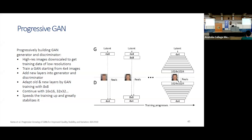One notable GAN example is the Progressive GAN (2018 paper). The key idea is to progressively grow both the generator and discriminator networks — starting from a 4×4 image, then 8×8, gradually reaching 1024×1024. The blurred image gradually becomes sharper and more detailed. This progressive approach greatly stabilizes training.